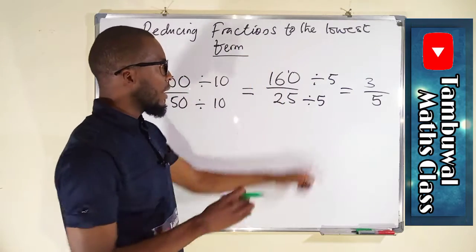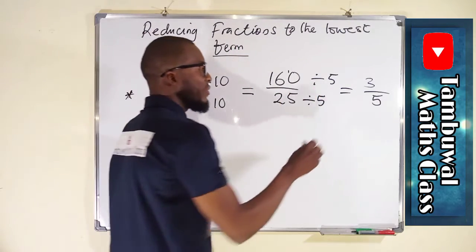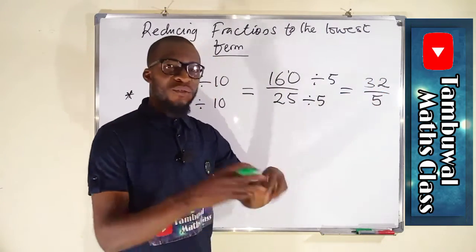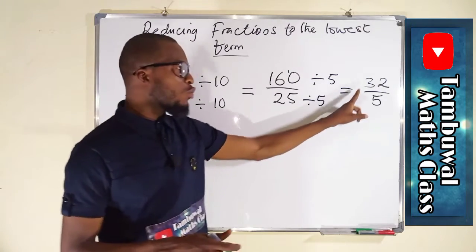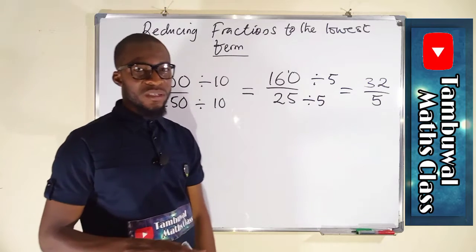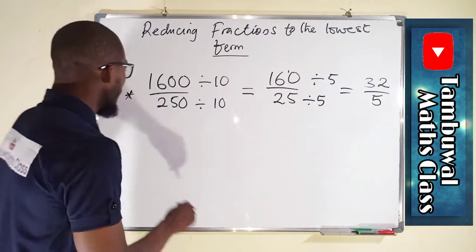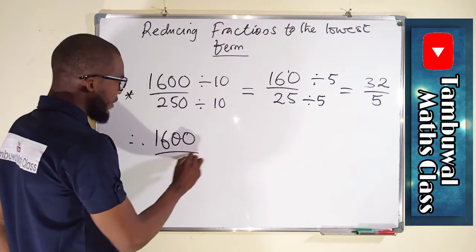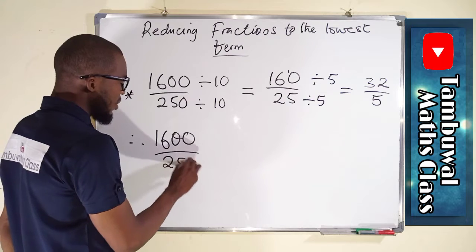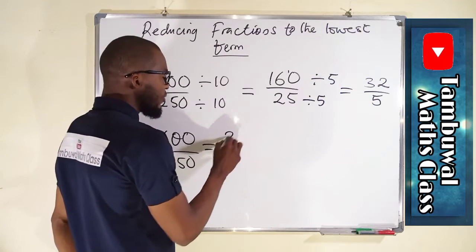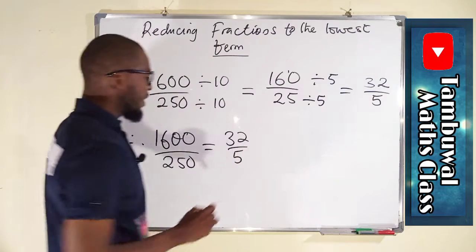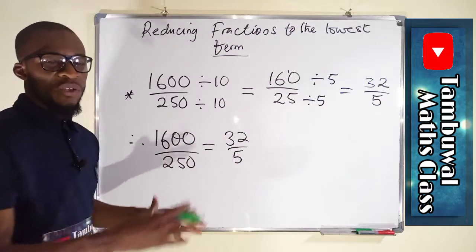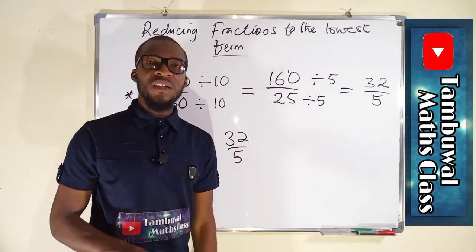We bring down the remainder 1 to make 10, and 5 goes into 10 two times, giving us 32. Since 32 and 5 have no common factor, we conclude that 1600 divided by 250 equals 32 over 5. This is the lowest term of this fraction, and both fractions are equivalent to one another.